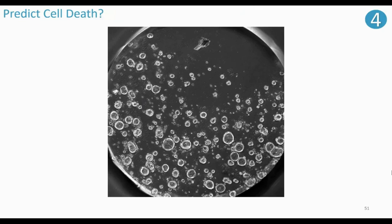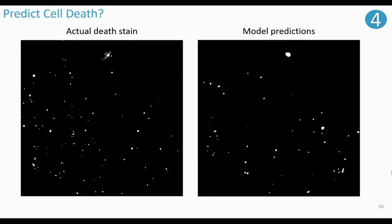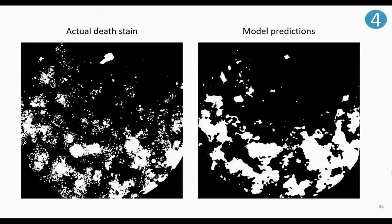Can we just predict how many organoids are alive or dead based on just the bright-field or phase contrast imaging? Here's some brief preliminary work: you can see the actual death stain on the left and what the model predicted on the right, based only on phase contrast imaging — the model did not see the fluorescent stain. Here's the same well of organoids that are completely dead: the actual death stain on the left and what our computer model predicts on the right. Please look out — hopefully we'll have this published in the near future. That concludes my presentation.